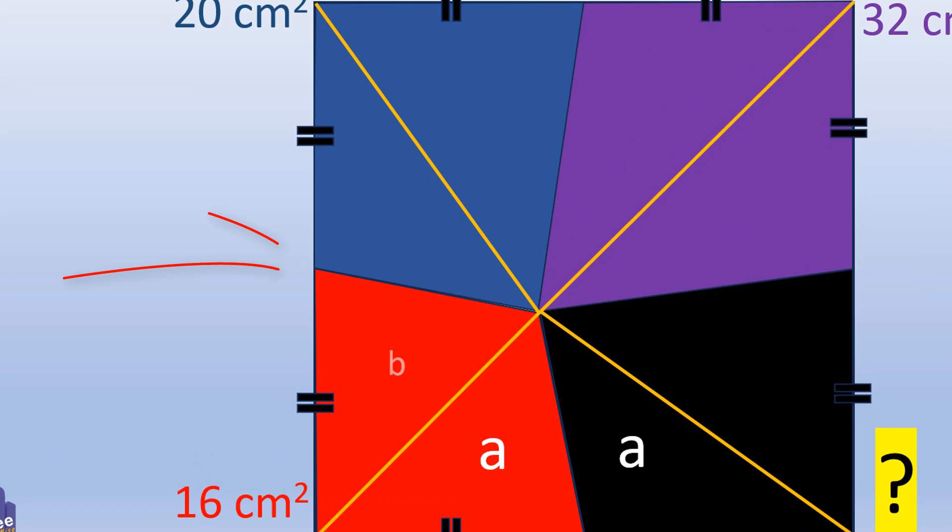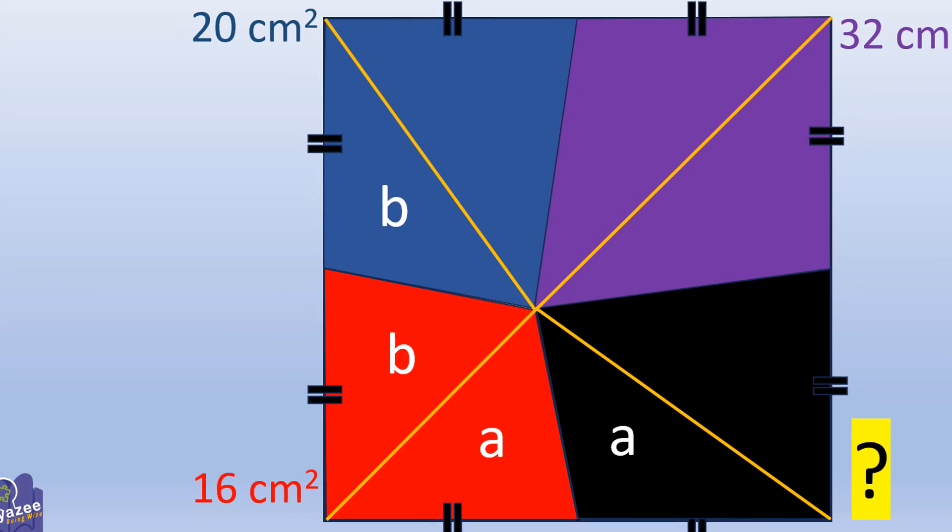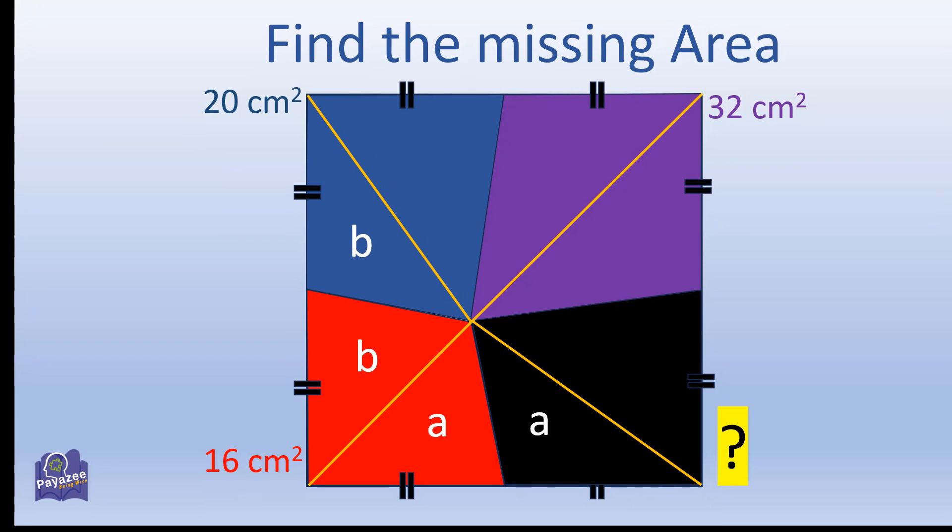We will consider the left side of the square and apply a similar principle. Label the triangle area as B as it has the same base and same height.